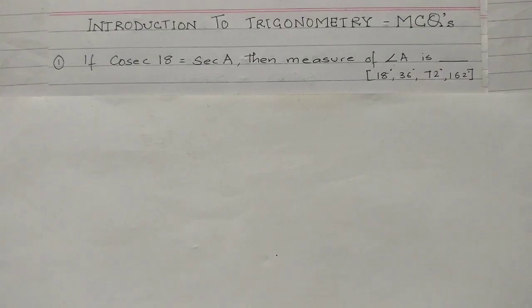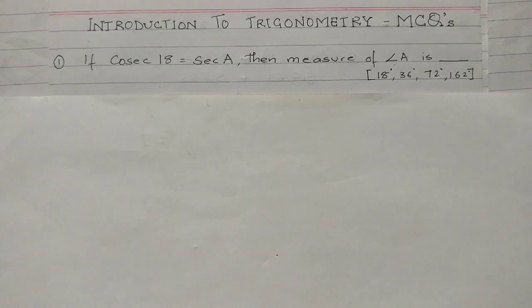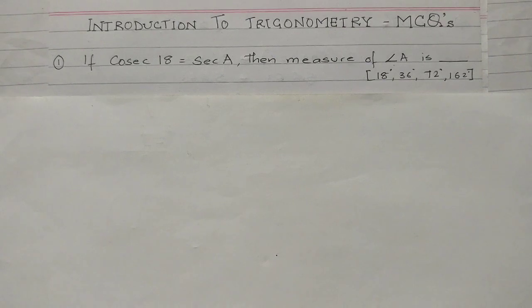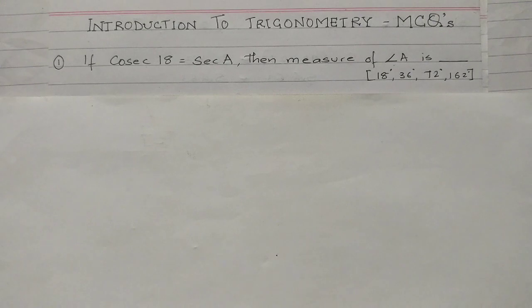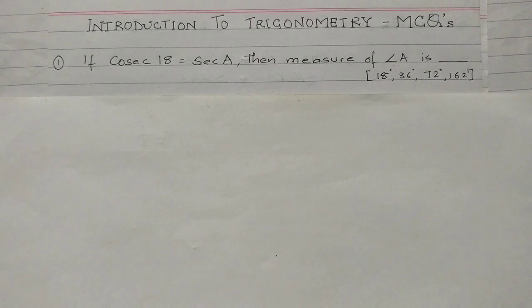The first question is: if cosec 18 is equal to sec A, then the measure of angle A is — dash. The options are 18, 36, 72, and 162 degrees.